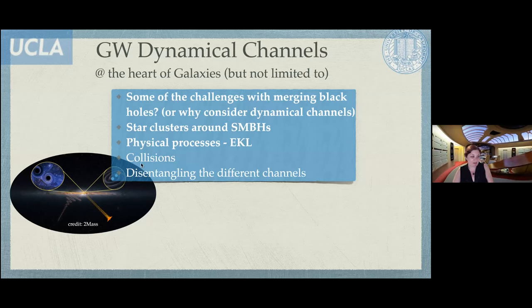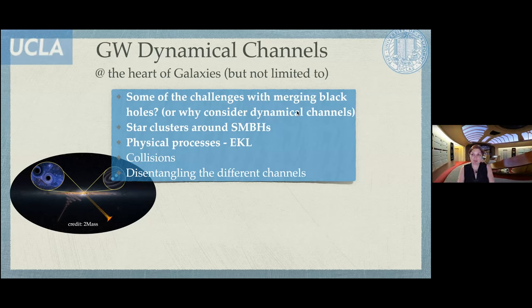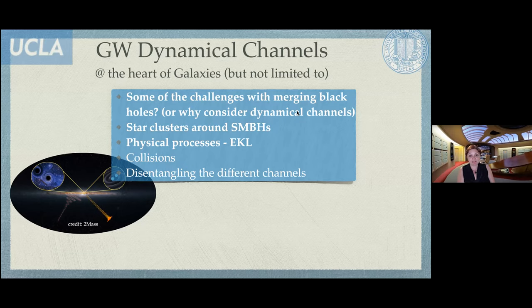Last time we talked about some of the challenges involved in merging black holes, then we talked about properties of star clusters around supermassive black holes and different physical processes — the Hills mechanism, unbinding binaries, and we spent a lot of time on the eccentric Kozai-Lidov mechanism. Today we'll talk about some more astrophysical topics: disentangling different channels, and if we have time, collisions.